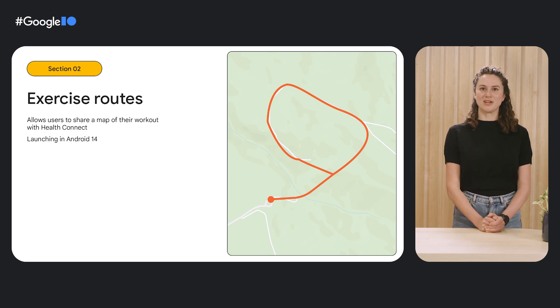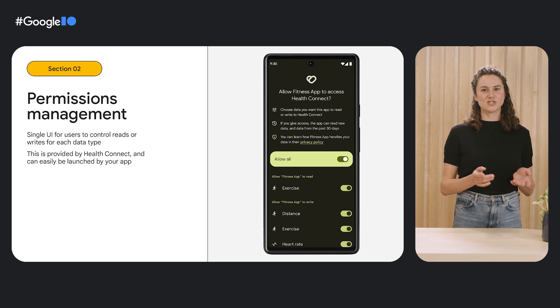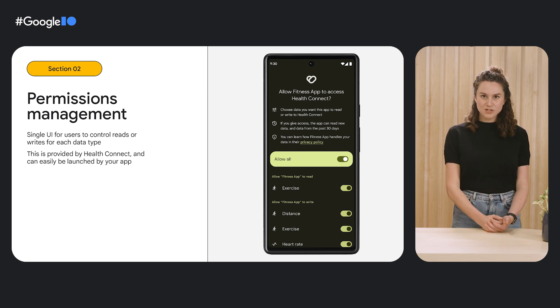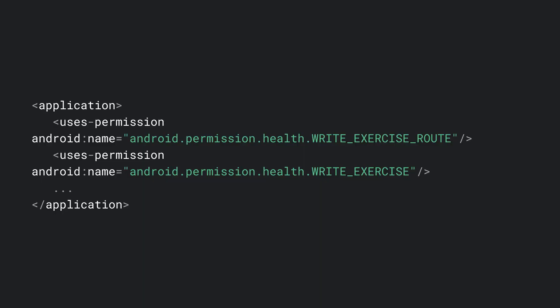Once you've tracked the route data — whether it's from a watch or another device — you can write this data into Health Connect. The Exercise Routes feature will be launching with Android 14, allowing users to share maps of their workouts with other apps. Users can give an app permission to write route data as part of an exercise session, and then other apps can give the user the option to import route data from Health Connect. Users always remain in control and can approve or deny each route import. To add this capability, first request write permissions — each data type like exercises, heart rate, or steps has a distinct read and write permission, giving the user full control over what they want to share with each app.